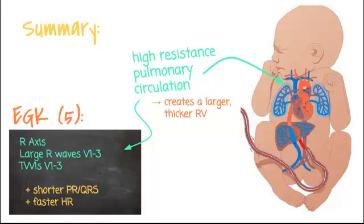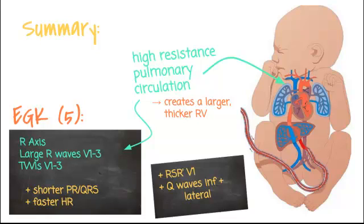So being RV dominant, we're going to have a right axis, large R waves in V1 through V3 — the right precordial leads — and T wave inversions in V1 through V3 that persist a little later into life. Kids also have a faster heart rate and shorter intervals. You might also see an RSR prime in V1 and Q waves inferiorly and laterally.